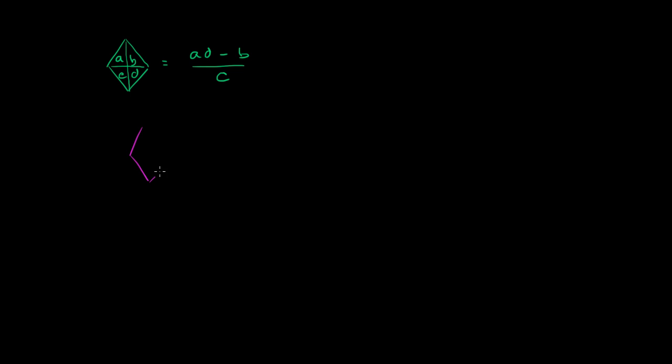If someone were to say evaluate this diamond where in my little sections I have a negative 1, a 5, a 3, and a 2, we would use the definition. Every time we see an A, that's going to be negative 1. So we have negative 1 times D. Well, D is whatever's in the bottom right section, so D is 2. It's going to be negative 1 times 2 minus B. Well, B is 5, minus 5, all of that over C, which is 3. So this equals negative 2 minus 5, which is negative 7 over 3.